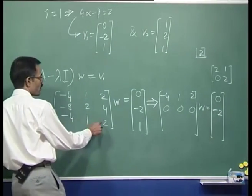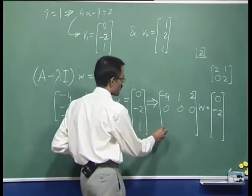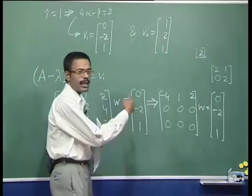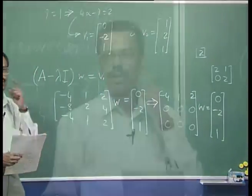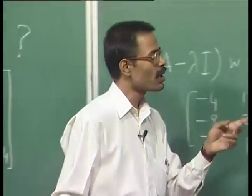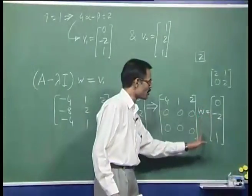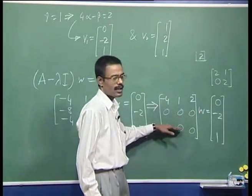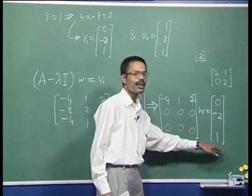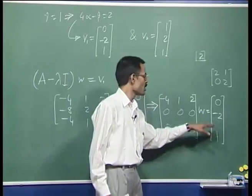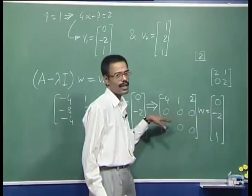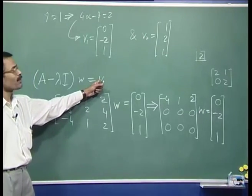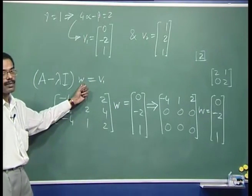We get 0 0 0 in the second row, and 0 0 1 in the third row after reduction. Can you see that this system of equations is actually inconsistent? Whatever w is, the second and third rows give zero on the left side but non-zero numbers on the right side. That means this system of equations is actually inconsistent — v1 does not admit a generalized eigenvector.